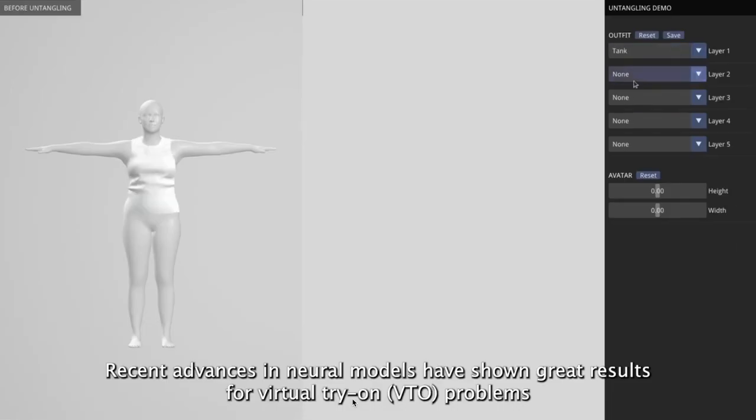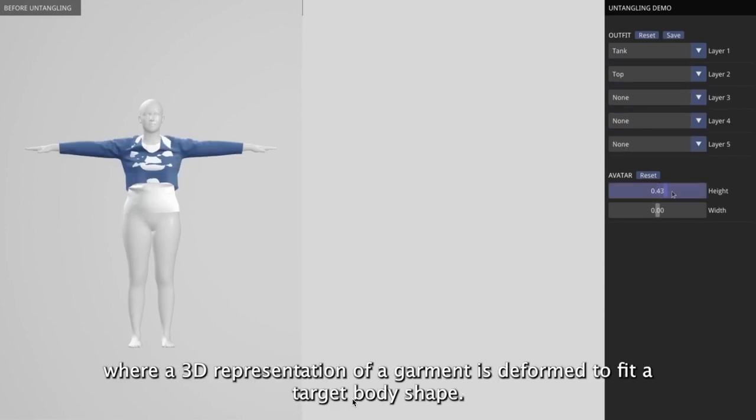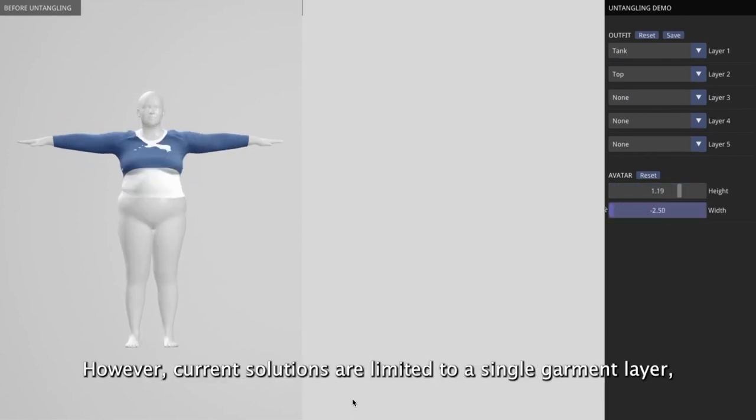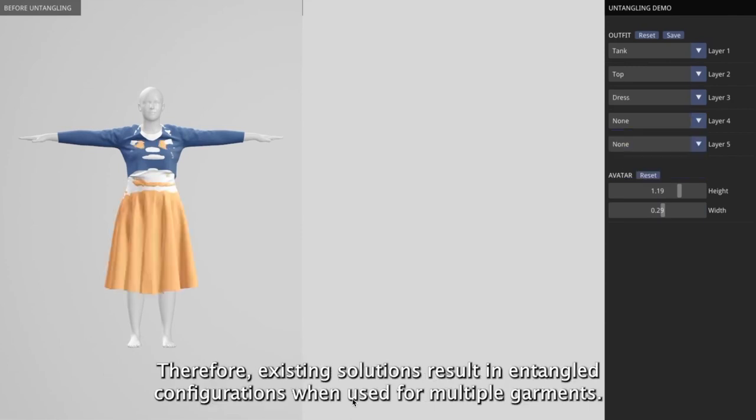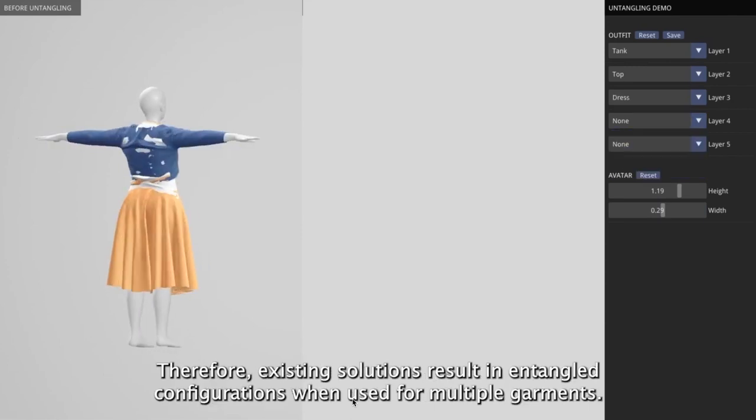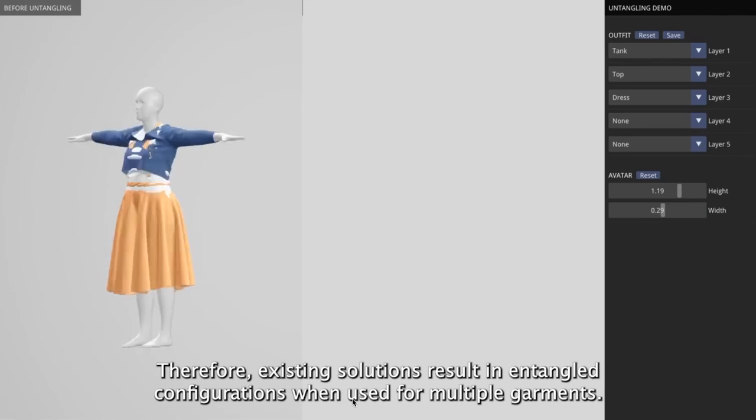Recent advances in neural models have shown great results for virtual trial problems where a 3D representation of a garment is deformed to fit a target body shape. However, current solutions are limited to a single garment layer and cannot address the combinatorial complexity of mixing different garments.